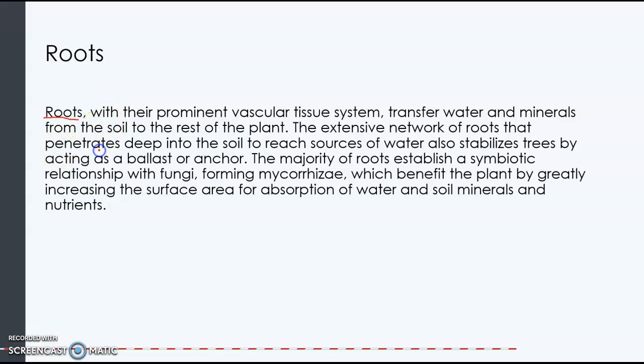Roots are found in plants with vascular tissue. Make sure that you remember that mycorrhizae are very common in land plants. That is a symbiotic relationship where fungi from the glomeromycota phylum grow symbiotically with the roots of plants. That is called mycorrhizae, and that helps the plant by increasing the surface area so that it can absorb more water and minerals from the soil. Most land plants contain mycorrhizae.